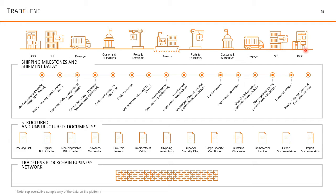Upon arrival at the destination port, a customs clearance process takes place. Then the shipment is released and a local land carrier delivers it to the buyer's location. At both ends — export and import — similar processes occur in reverse. Many different organizations are involved: 3PLs (like courier services), inland/land carriers, ocean carriers (like Maersk), and customs authorities. Each organization maintains its own data in its own standards, creating siloed information.